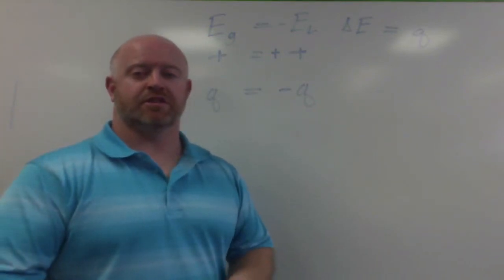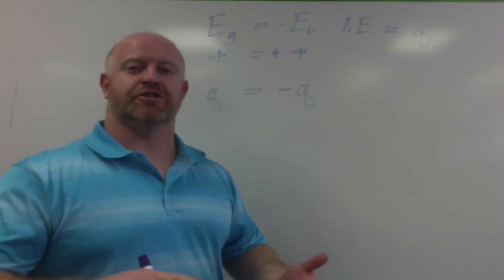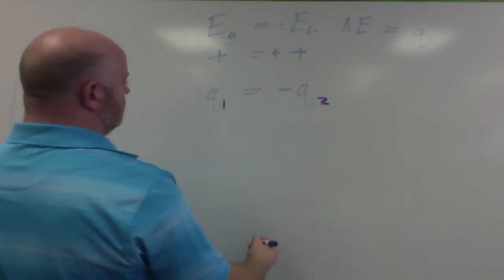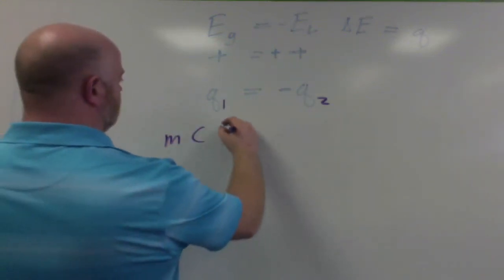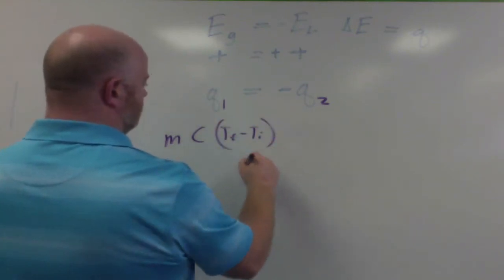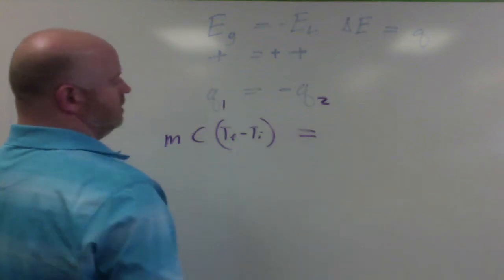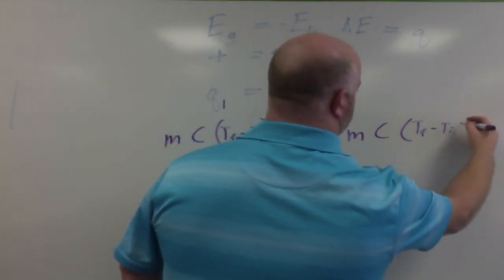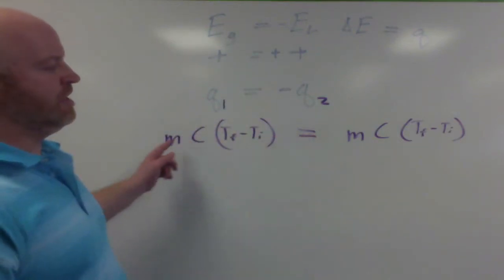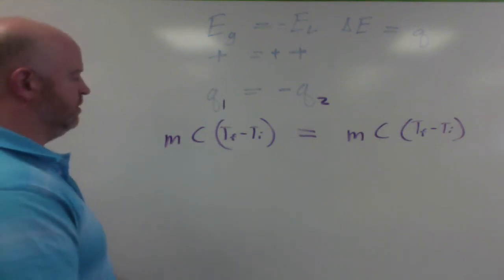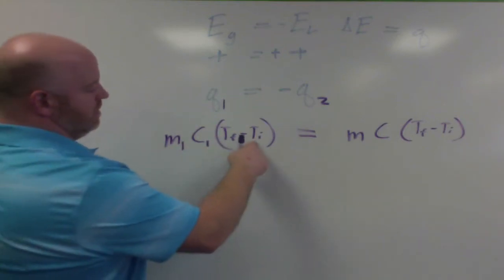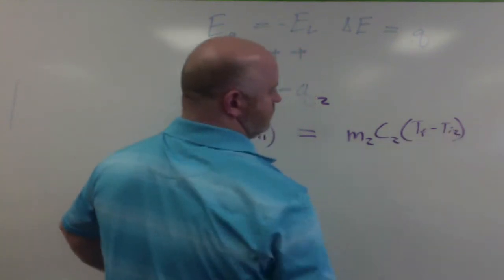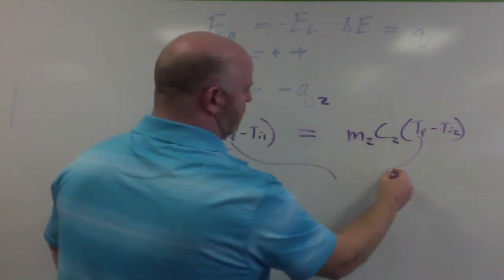Because our q values are equal and we're dealing with two different substances, in a lab setting we actually measure masses, temperatures, and specific heat capacities. We can expand one more step: for substance one versus substance two, mass times specific heat capacity times change in temperature (T_final minus T_initial) equals mass of substance two times its specific heat capacity times its temperature change. We use subscripts to denote substance one and substance two.